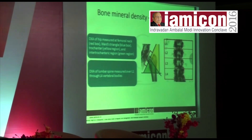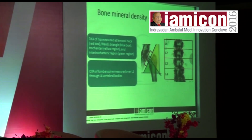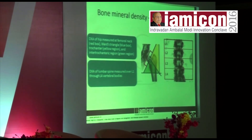Bone mineral density — what sites are measured? DEXA of the hip is measured at the femoral neck, trochanter, and intertrochanteric region — basically the femur. DEXA of the lumbar spine is measured over L1 through L4 vertebral bodies. The DEXA scan is the large machine for bone mineral density. We also use a portable machine which takes the wrist or calcaneum as the measurement indicator.